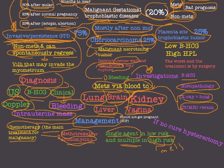We have to follow up the patient just as we did in the benign condition. Beta-hCG is measured within 48 hours then weekly; we need three consecutive negative values. If there is no cure — if beta-hCG is still raising or plateauing — then we have to move to hysterectomy.